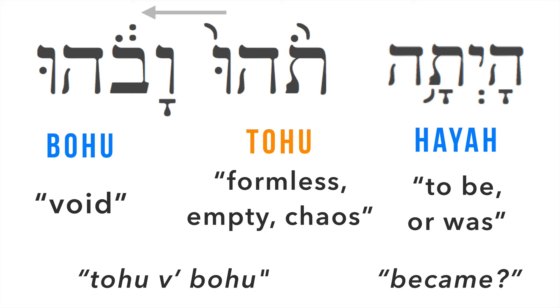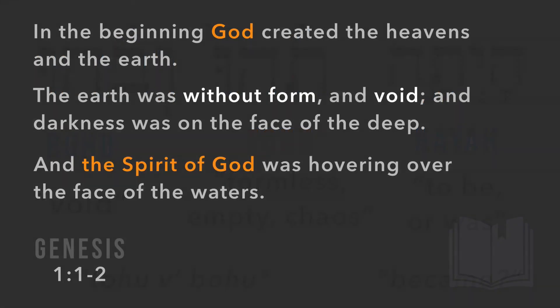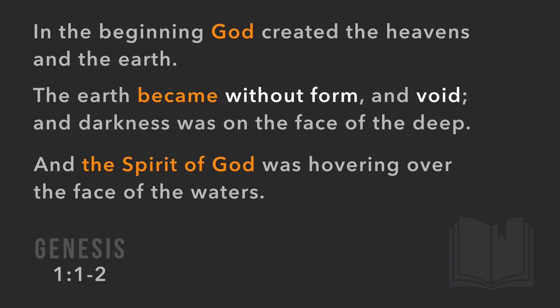This is a bit of conjecture, but it plays into what we talked about in the previous module. If the earth "became" without form and void, that could connect to the story of Lucifer and the angels — those events could have played a role in making the earth without form and void. It's not something I'd hang my full theology on, but it's interesting given the spiritual elements that had to be in place by the time Genesis 3 rolls around.